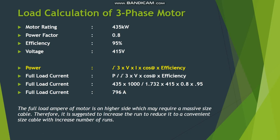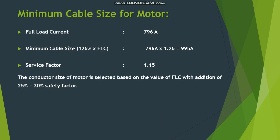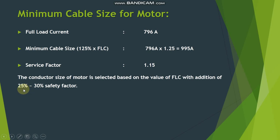The full load current of this motor is on the higher side, which may require a massive cable size. Therefore it is suggested to increase the number of runs rather than reduce to a single convenient cable size. After calculating the full load current, we define the minimum cable size by adding a safety factor. Some designers use 25% and some use 30-35% safety factor on the full load current.